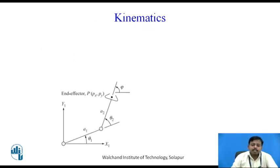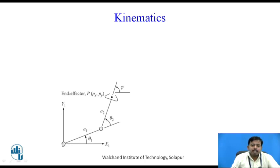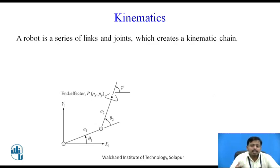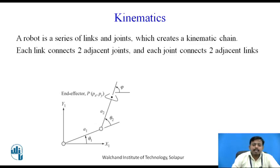So, what is kinematics? As you can see, this is link 1 whose length is denoted by a1, and this is link 2 whose length is denoted by a2. These are the joints which connect the links — this joint connects link 1 to link 2, and this is the base joint. There are 2 joints and 2 links. An industrial robot is a series of links and joints, creating a kinematic chain. Each link connects 2 adjacent joints and each joint connects 2 adjacent links.